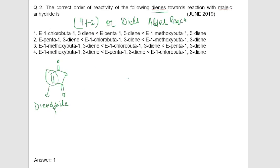So for Diels-Alder reaction we need two components. One is diene and another one is dienophile. So dienophile is maleic anhydride and here is diene.